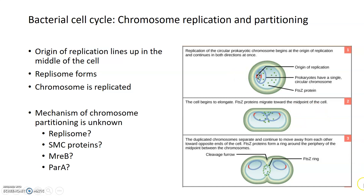During the process of replication, the chromosomes also begin to partition themselves. Originally oriented in the middle, they have to end up at the poles of the large parent cell so that each daughter receives an entire chromosome. The mechanism responsible for this is relatively unknown and appears to be species-specific, with each species using a somewhat different method of partitioning its chromosomes during this step of the cell cycle.